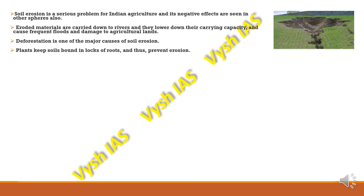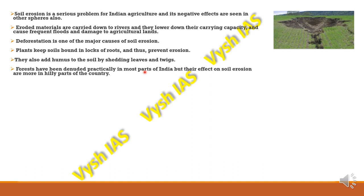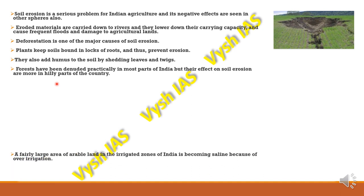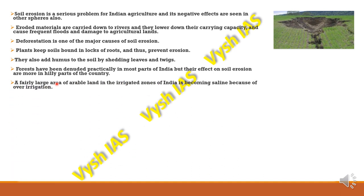Plants keep soil bound in locks of roots and thus prevent erosion. Even small plants can have a huge impact on preventing soil erosion. Trees also add humus to the soil by shedding leaves and twigs. Forests have been denuded practically in most parts of India, with greater effect on soil erosion in hilly parts due to low precipitation. A fairly large area of arable land in irrigated zones is becoming saline due to over-irrigation, as salt from the lower soil profiles comes to the surface and destroys fertility.